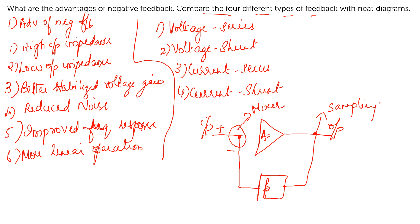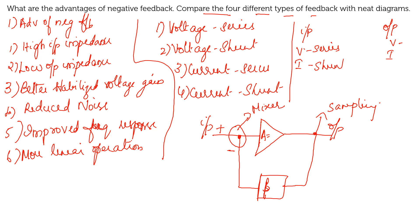The input parameter can be either voltage or current. Similarly, the output parameter can also be either voltage or current. One important thing to remember: if the input is voltage, it will be a series connection; if the input is current, it will be a shunt connection. The opposite applies on the output side — if the output is voltage, it will be a shunt connection; if the output is current, it is going to be a series connection.